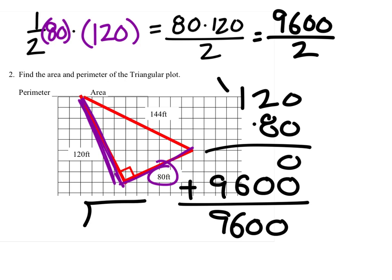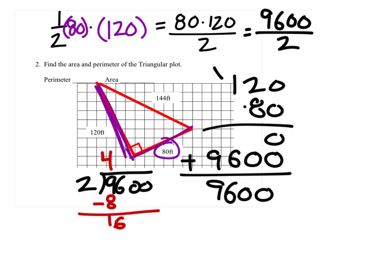We can do that like this. 9,600 divided by 2. 2 goes into 9 four times. 4 times 2 is 8. Subtract. We get 1,600. And 2 goes into 16, 8 times. 2 times 8 is 16. So when we subtract, we get zero.